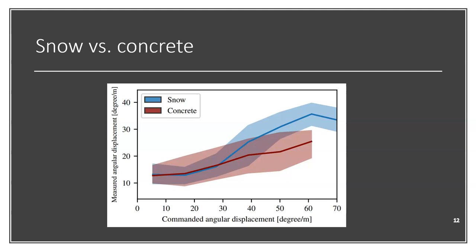Finally, we compared the commanded angular displacement that was sent to the robot that we can see on the x-axis of this figure, with the measured angular displacement of the robot's body that was given by the ICP algorithm, that is shown on the y-axis of this figure. We can see the distributions for snow-covered terrains in blue in this figure, and we can see the distribution of displacement on concrete in red in this figure. The shaded areas represent the interquartile range of this distribution.